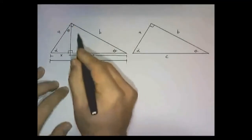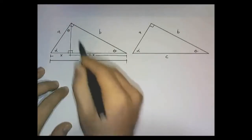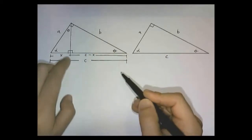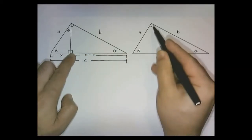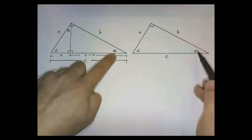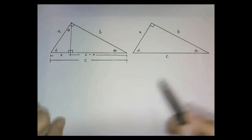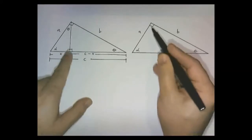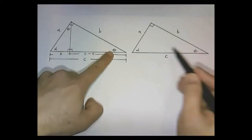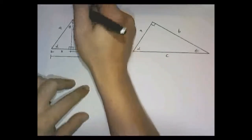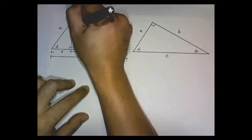If you take a look at this other slightly larger triangle right here, it has the angle 90 degrees, just like this one, and it has the angle theta, just like this one. Well, if these two triangles share the angles 90 degrees and theta, and if this angle is alpha, then this angle up here has to be alpha.